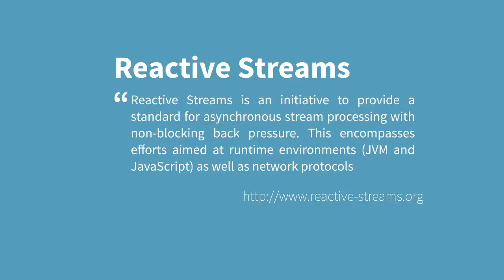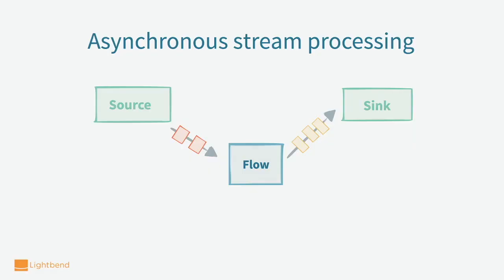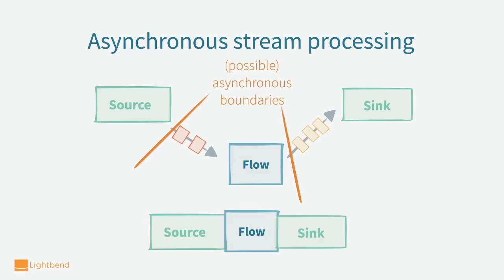ACCA streams implements the reactive stream standard, and a key point is the asynchronous approach. Looking back at the stream process we saw earlier, the asynchronous nature of ACCA streams allows us to add asynchronous boundaries to these operations, so that the flow and the sink can operate asynchronously of each other. We can add those boundaries in every step of our flow. In most cases, however, it is more efficient not to have them — if we don't explicitly add boundaries, the flow is merged together and runs in one thread without the cost of synchronization across threads.